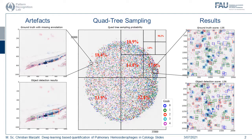This visual abstract represents everything we have done. In the middle, we see a Holtz-Lite image from a pulmonary hemocidrophage cytology sample, which was digitalized using a Holtz-Lite image and stained with Persian blue.